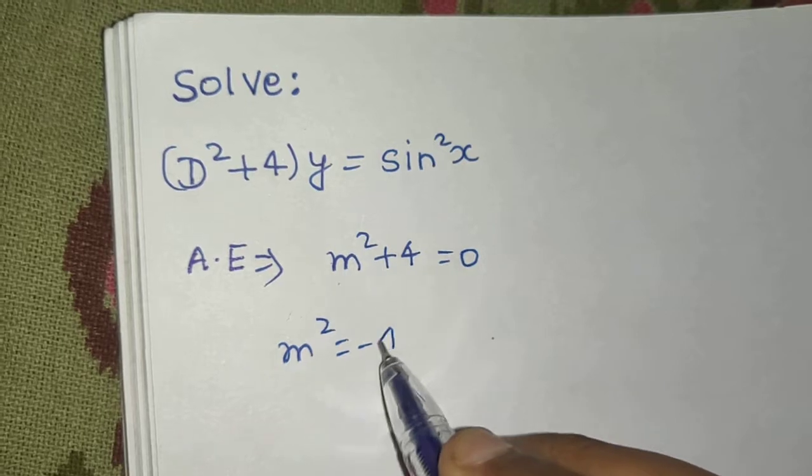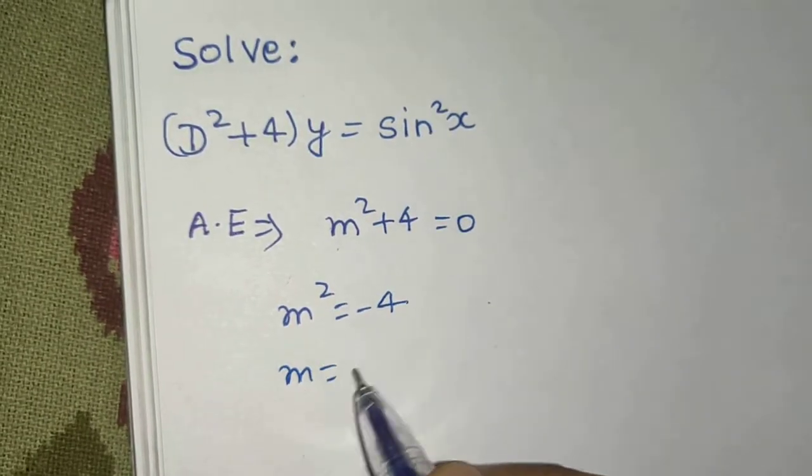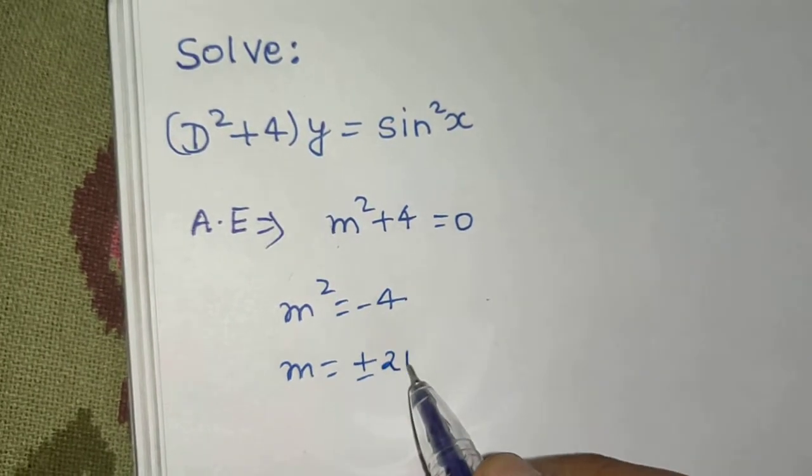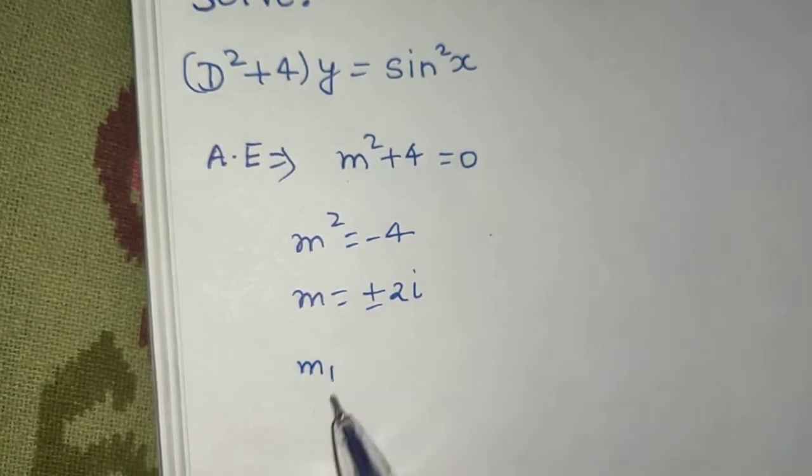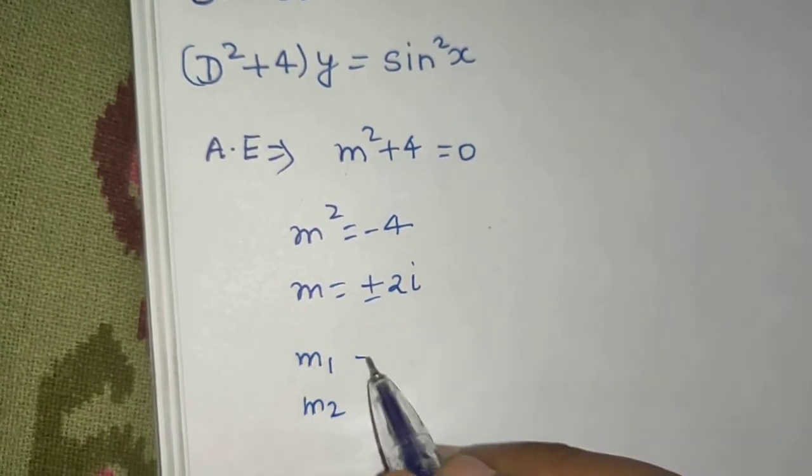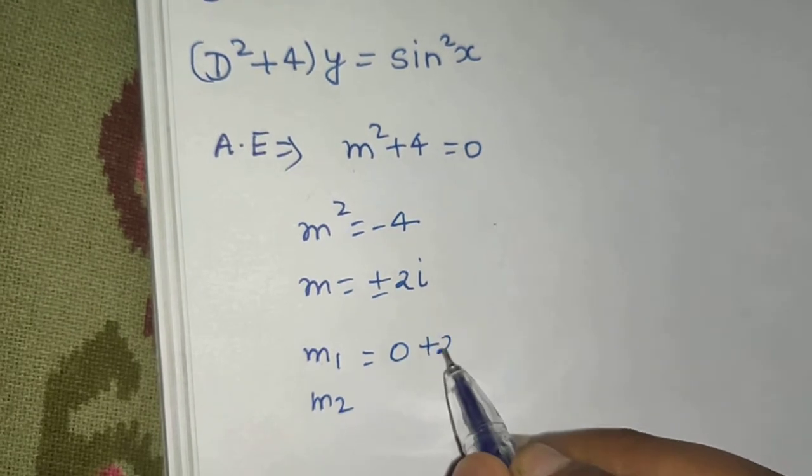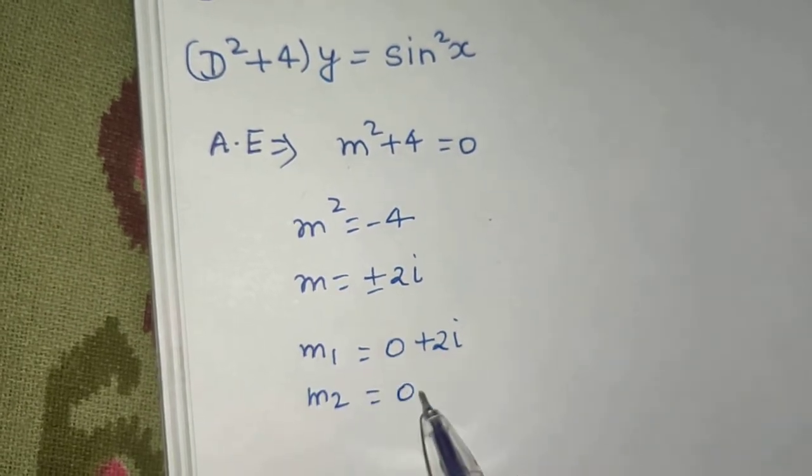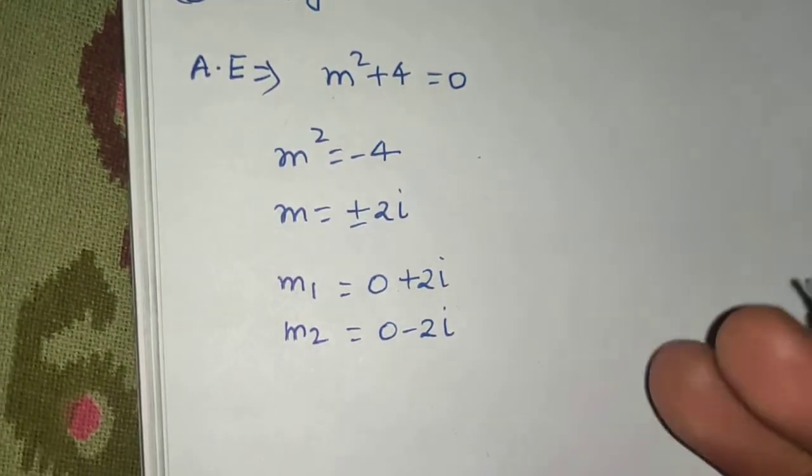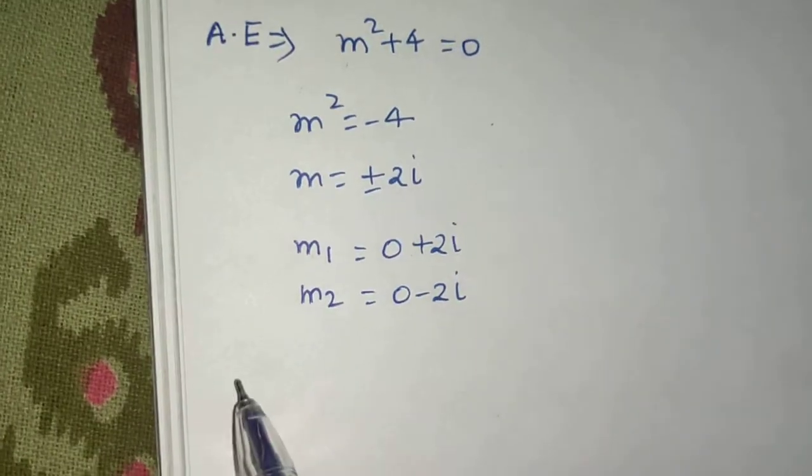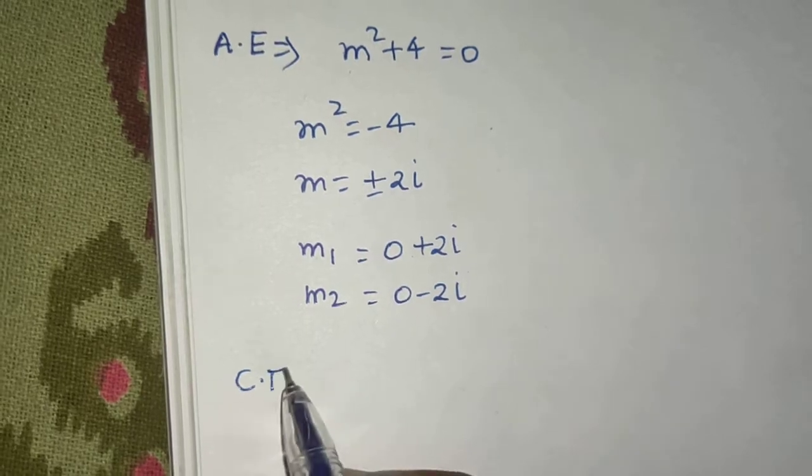Now find its roots, so m square equals to minus 4. So m you are getting as plus minus 2 iota, I hope you know how to solve this. Now if I write separately, then your m1 is 0 plus 2 iota and m2 is 0 minus 2 iota.